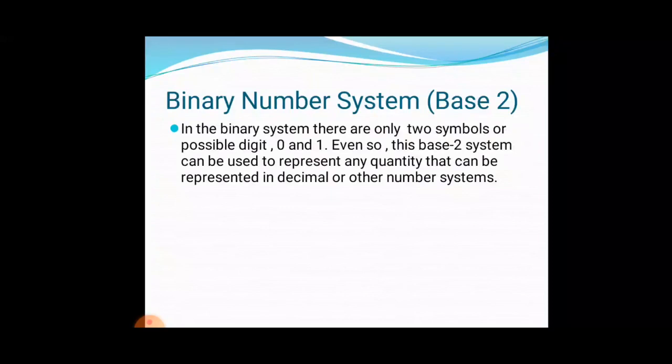Although other systems are often used in conjunction with binary, in the binary system, there are only two symbols or possible digit values: 0 and 1. Even so, this base 2 system can be used to represent any quantity that can be represented in decimal or other systems. The binary system is also a positional value system wherein each binary digit has its own value or weight expressed as power of 2.